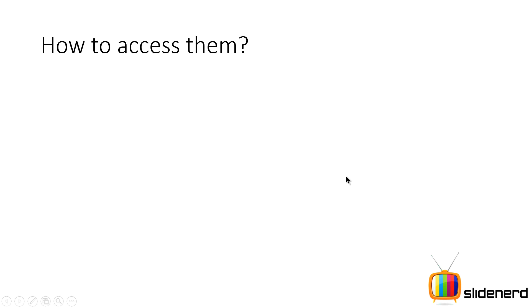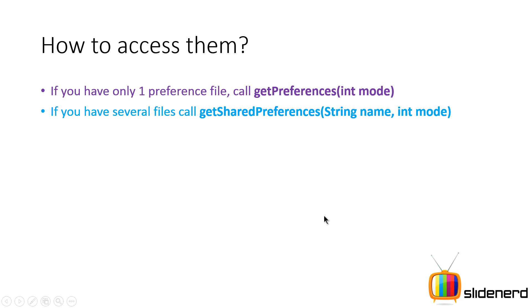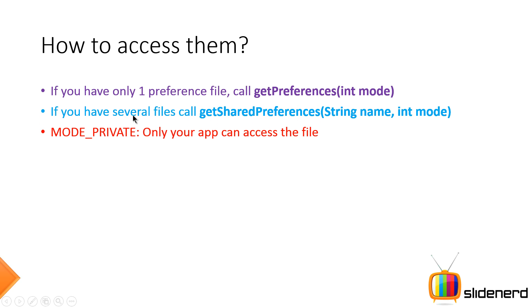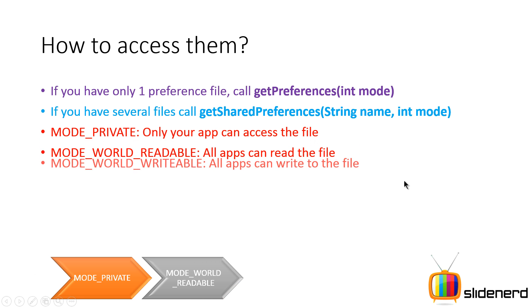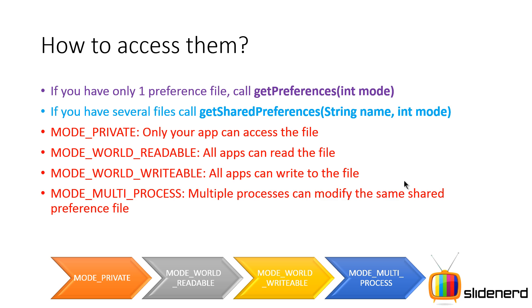Now let's talk about how to access Shared Preferences. Your app can have a single preference file where you can store everything — in that case, call getPreferences with the int mode. Or you can have several files that belong to your app — in that case, call getSharedPreferences with the name of the file and int mode. The int mode works like this: mode private means only your app can access the file; mode world readable means all apps can read the file; mode world writable means all apps can write the file; and multiprocess means multiple processes can modify the same shared preference file.